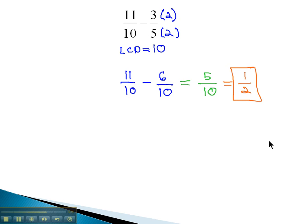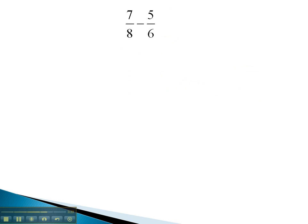Let's try another example. In this problem, we have different denominators, so we'll identify the least common denominator of 8 and 6. Using mental math, we can see they both divide into 24.